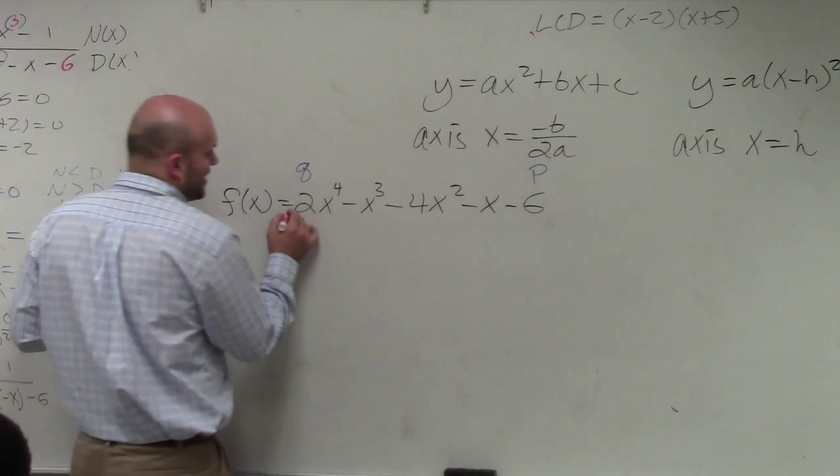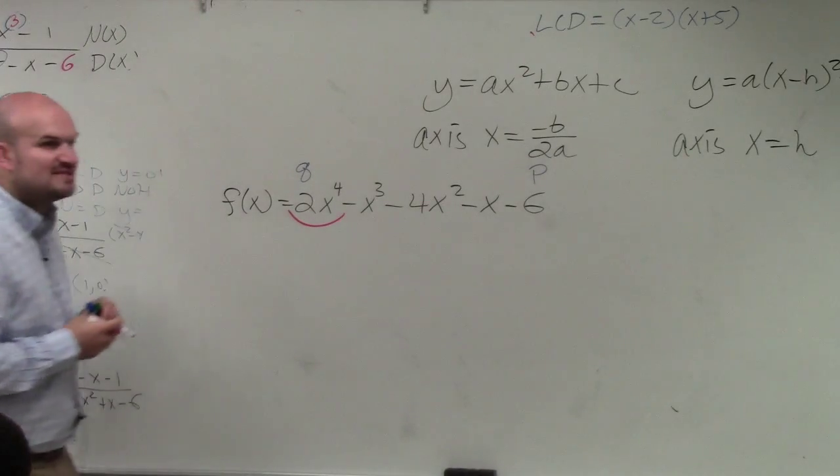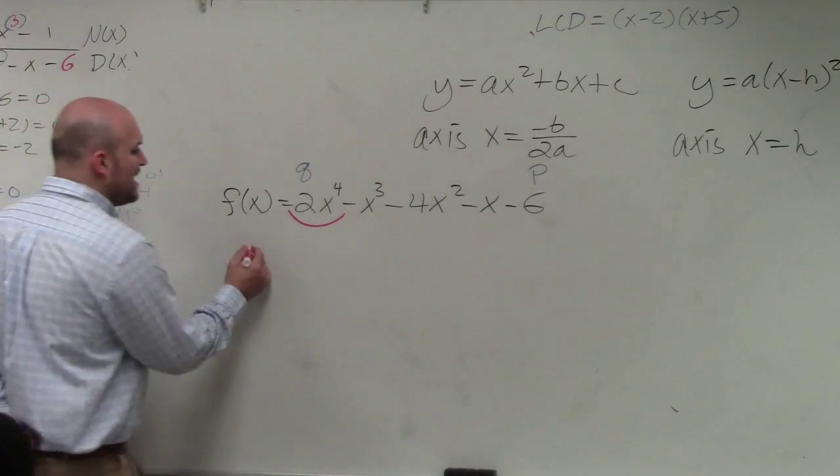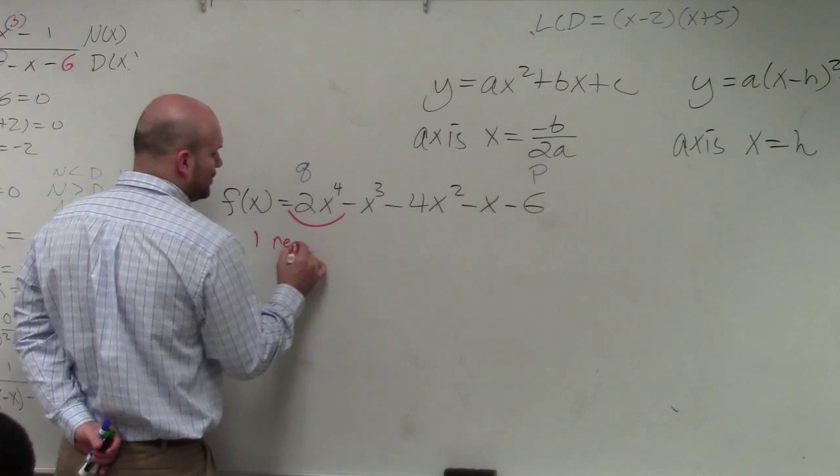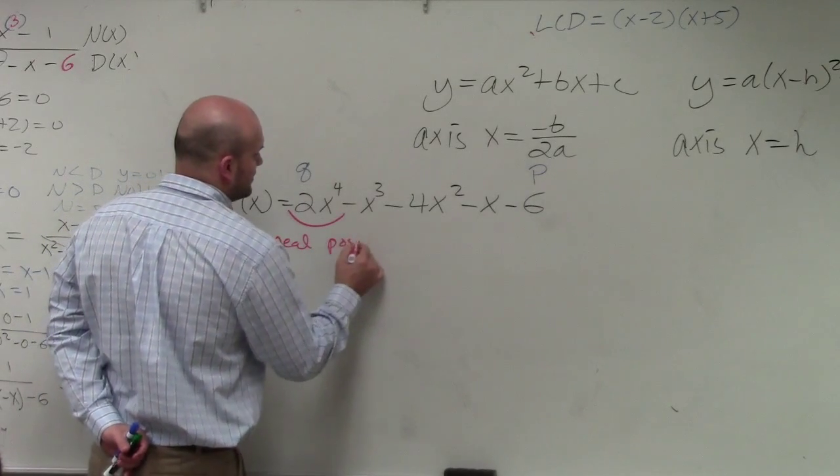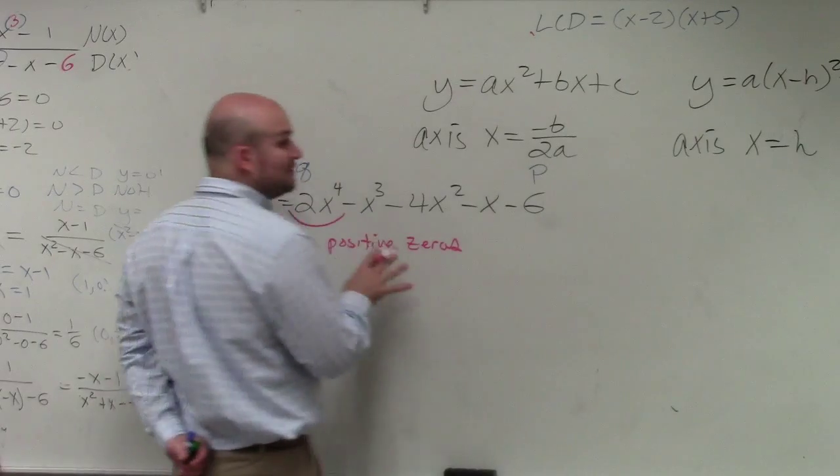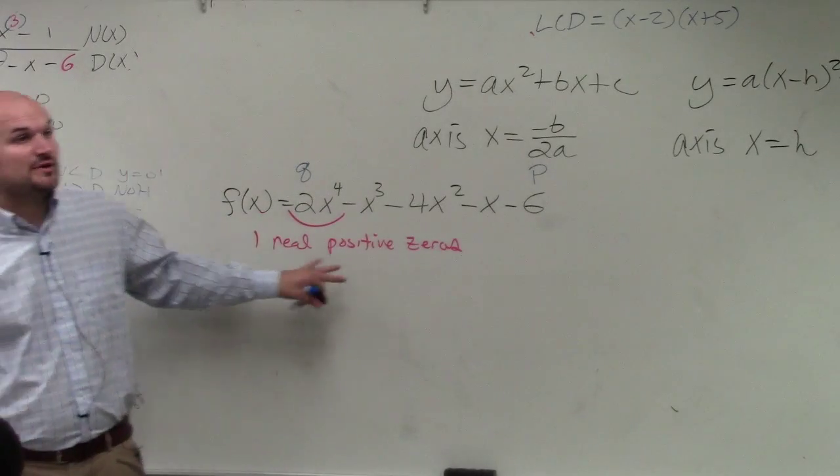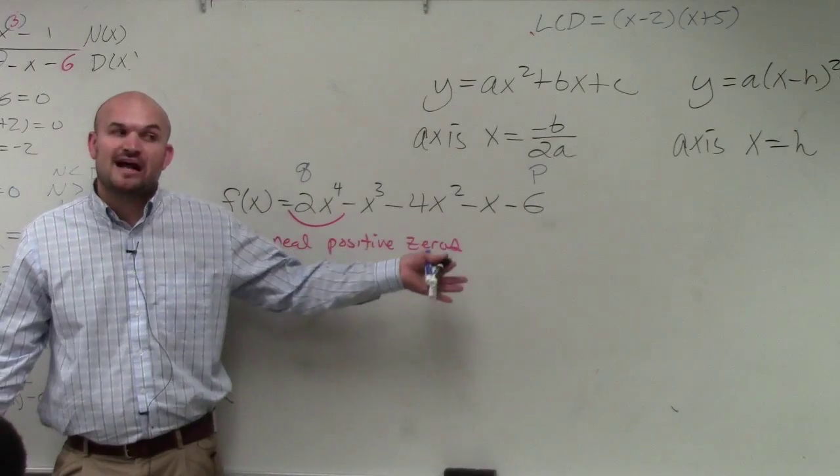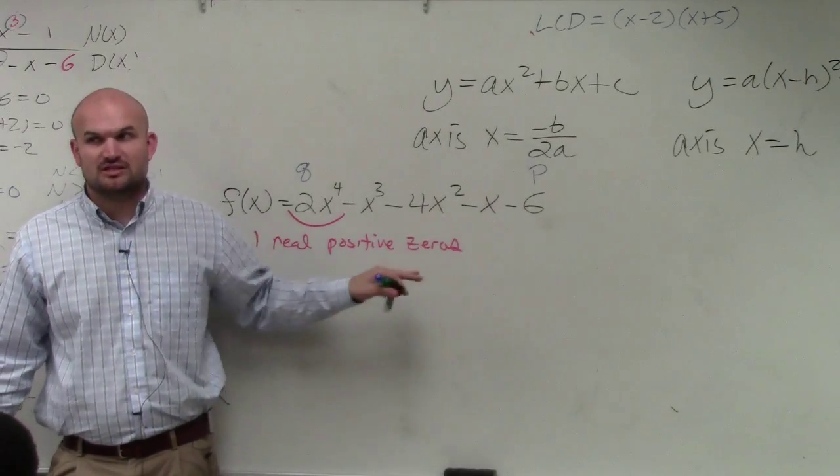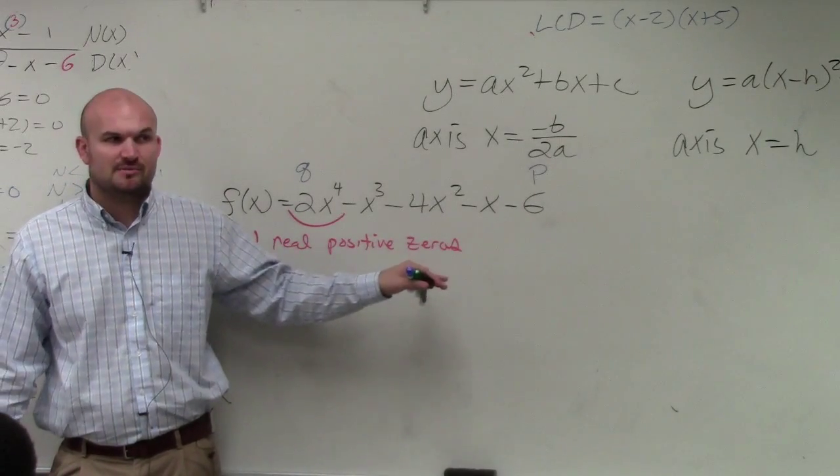And what Rene found out was that when you look at the number of sign changes of the polynomial, that tells you how many real positive zeros you have. Now notice, these zeros could be rational or irrational. The rational zero test only talks about rational numbers. It doesn't talk about irrational numbers.